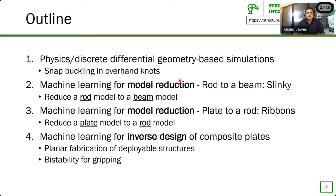Let me give a brief outline of my talk today. First, I will talk about physics-based simulations of rods, ropes, and tying knots in ropes — no machine learning in the first part. Then I will talk about using machine learning for model reduction: how can I speed up these physics-based simulations? For example, how can I reduce a complicated rod model into a simplified beam model, or reduce a plate model to a simpler rod model? In the last part, I will talk about inverse design — given a target shape, how can I go about achieving that shape?